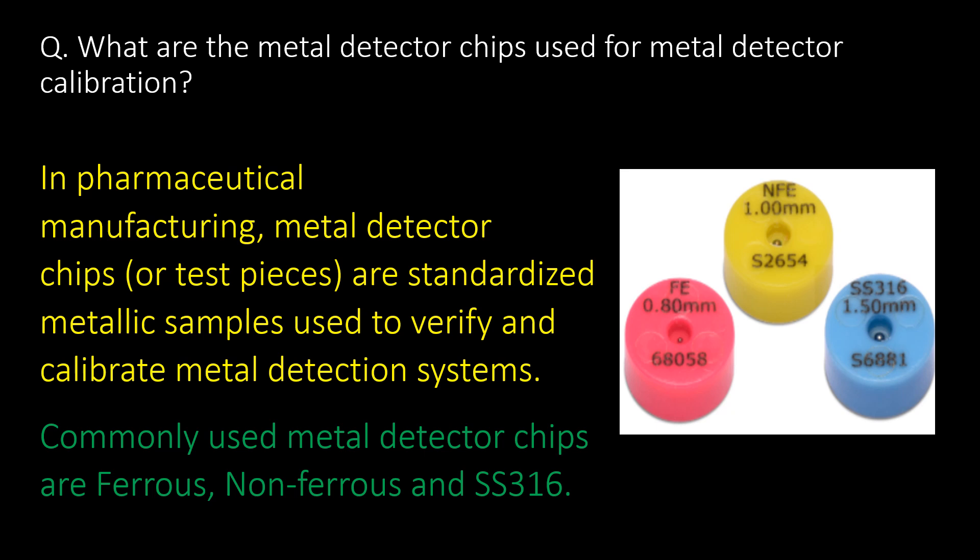What are the metal detector chips used for metal detector calibration? In pharmaceutical manufacturing, metal detector chips or test pieces are standardized metallic samples used to verify and calibrate metal detection systems. Commonly used metal detector chips are ferrous, non-ferrous, and SS 316, as shown in the diagram.